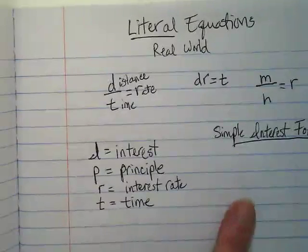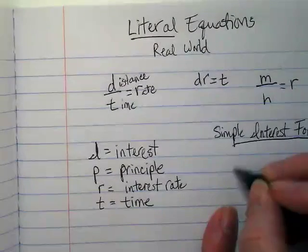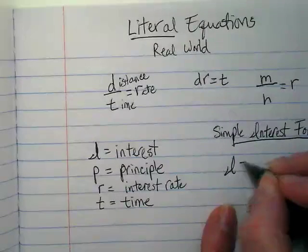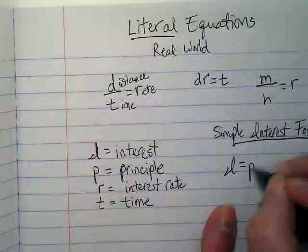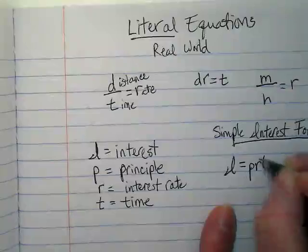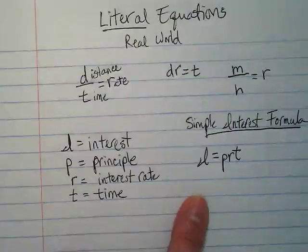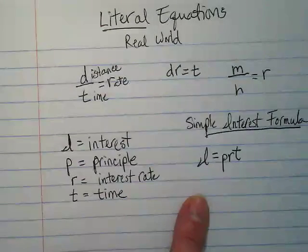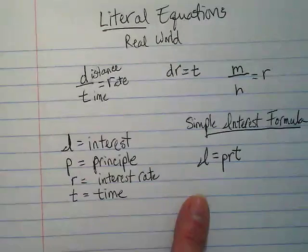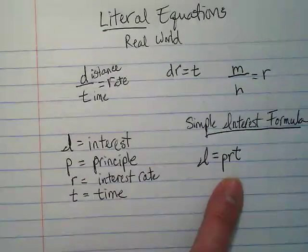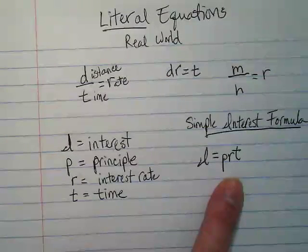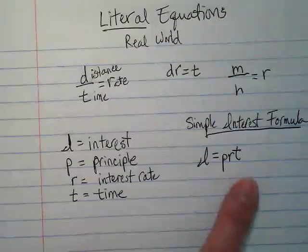And that's what this equation is going to show. It starts off with a capital I for interest, is equal to the principal times the rate times the time. The principal is the money you put in the bank.